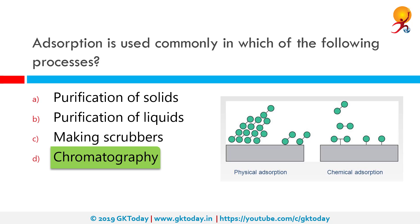Adsorption is the addition of atoms, ions or molecules from a gas, liquid or dissolved solid to a surface. This process creates a film of adsorbate on the surface of the adsorbent. This process differs from absorption, in which a fluid is dissolved by or permeates a liquid or solid respectively.